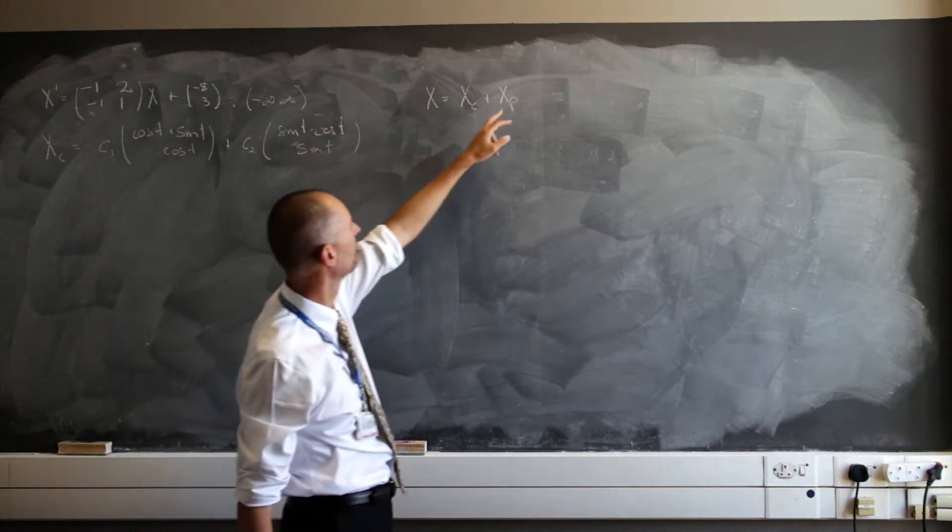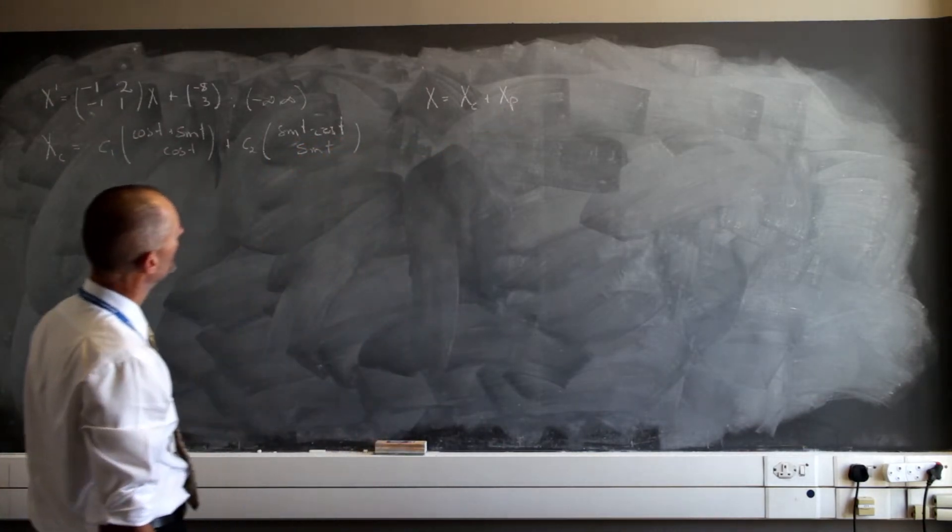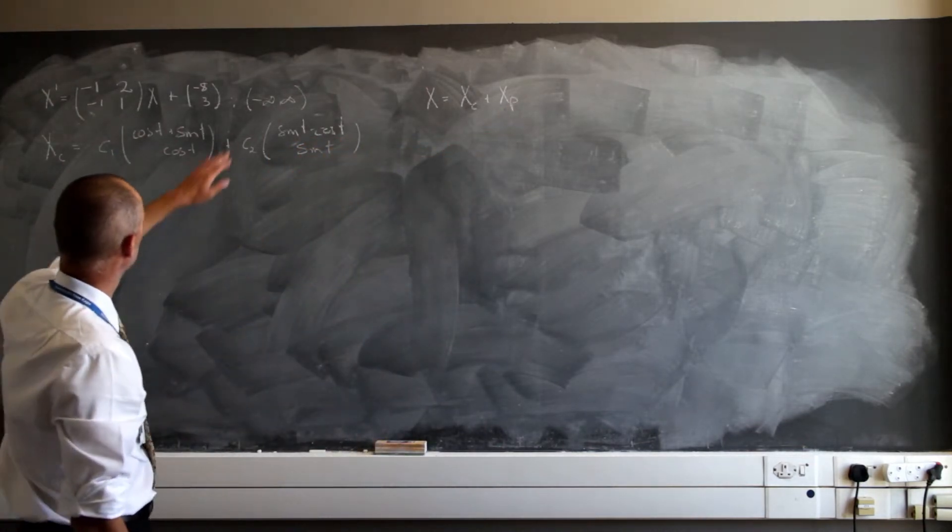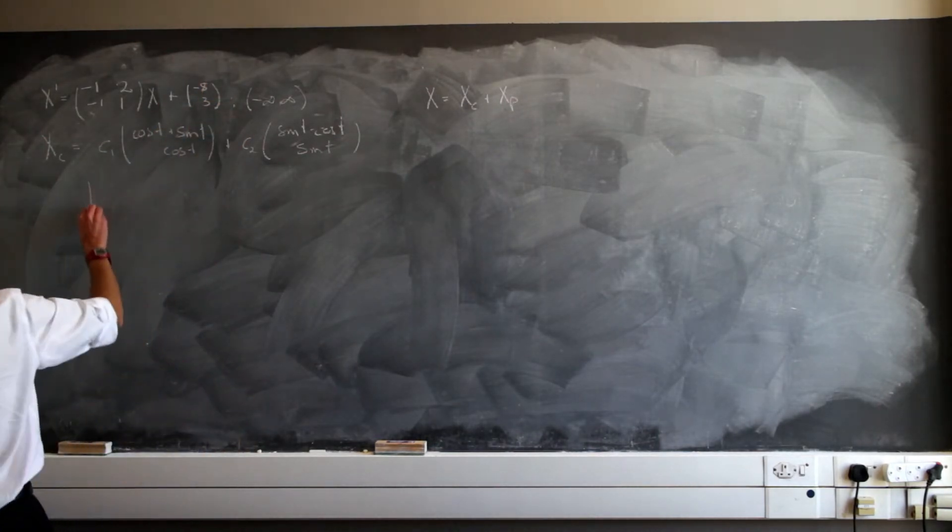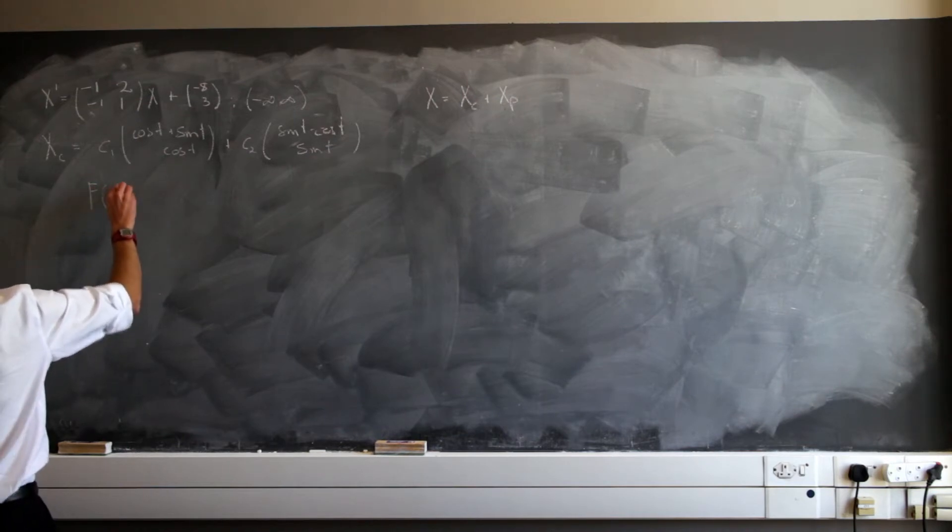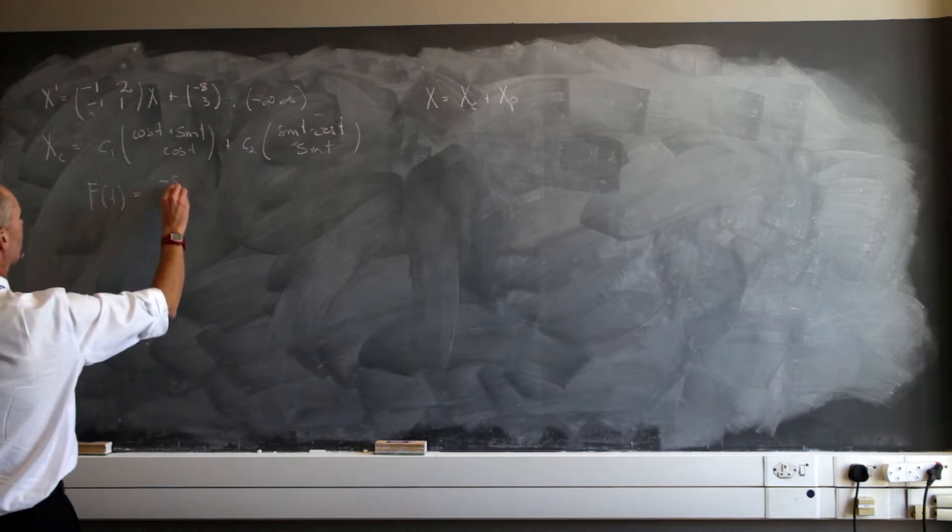And then we're going to add this particular part. And if we just look at this part here, we call this the f of t. That's usually how the textbooks would denote it, f of t, and in this instance it's negative 8 and 3.